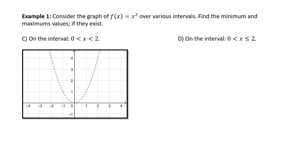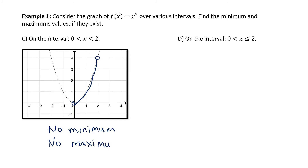Part c: on the interval between zero and two, endpoints not included. On the parabola, the vertex has an open hole, and at the point where x = 2 — the ordered pair (2, 4) — we have another open hole. We are interested in the portion of the parabola between zero and two, endpoints not included. The lowest point is not included, so we have no minimum. The highest point in that interval is also not included, so we have no maximum.